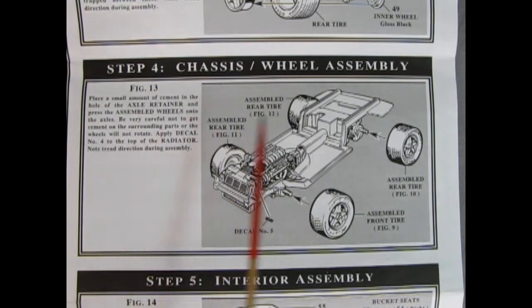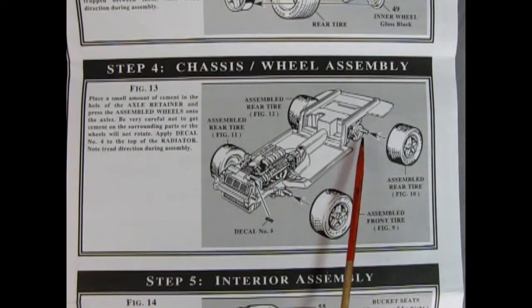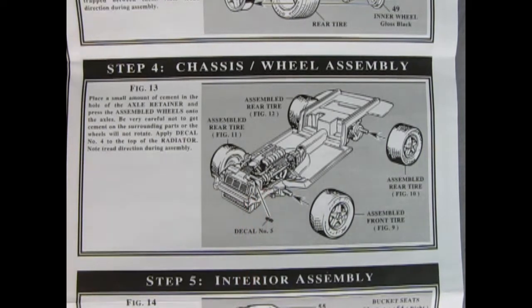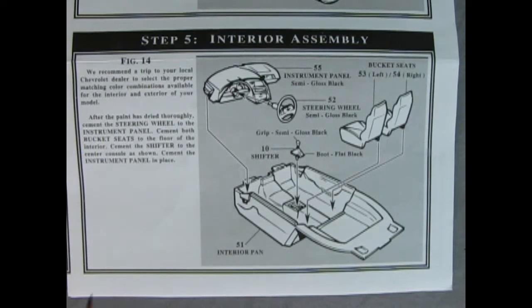In panel four we see our chassis and wheel assembly. You want to put a little bit of glue on here and then carefully press the wheels on in place right on our axle pins. And then here we have decal five going on the side of the radiator, and that'll help dress it up under the hood.